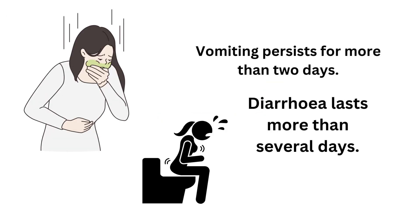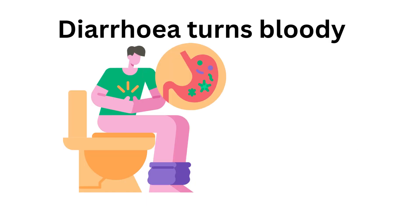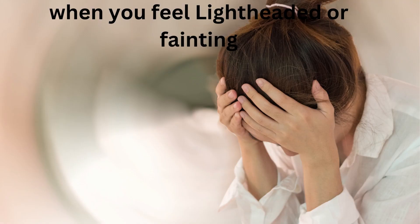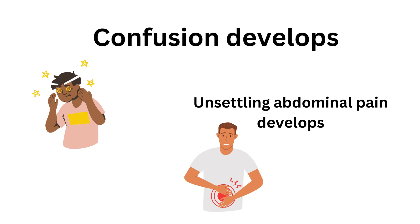Seek medical attention if vomiting persists for more than two days, diarrhea lasts more than several days, diarrhea turns bloody, fever is above 102°F (39°C) or higher, when you feel lightheaded or faint, confusion develops, or unsettling abdominal pain develops.